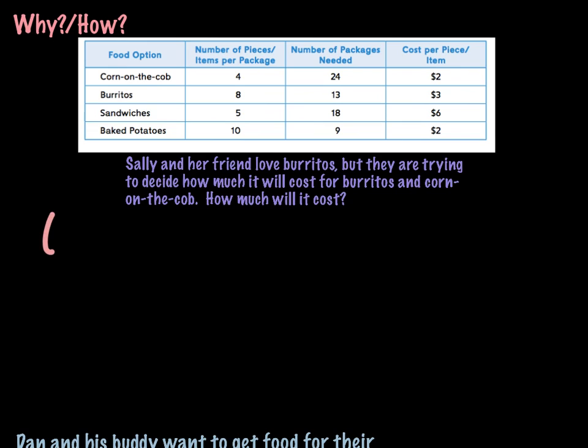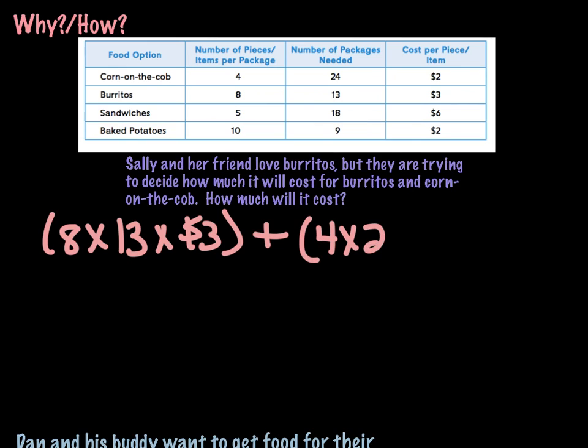So burritos, parentheses, 8 times 13 times $3, and we're adding them together once again, and then my corn on the cob, parentheses, 4 times 24 times $2 equals A, okay?